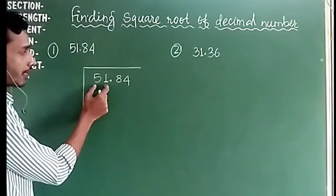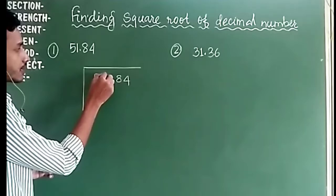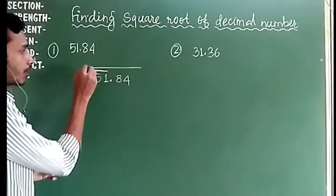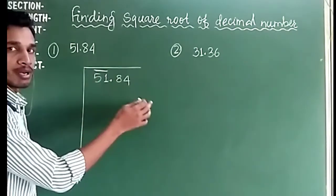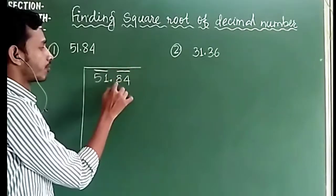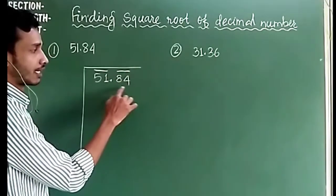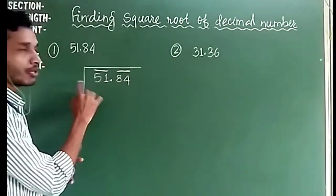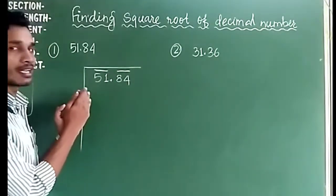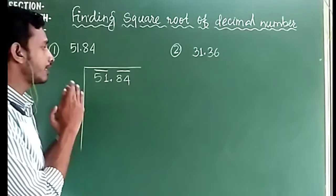Now what we do is we will make a pair of the whole part and the decimal part. The whole part has one pair, and for the decimal part we will start pairing from the left side, while for the whole part we start pairing from the right side.